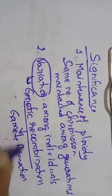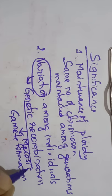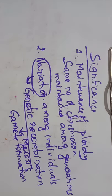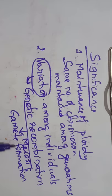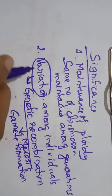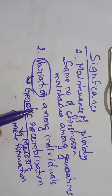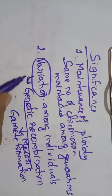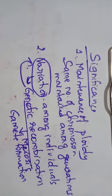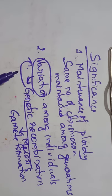Gamete formation is nothing but meiosis — gametes are formed because of meiosis. So variation among individuals occurs because of genetic recombination during gamete formation, and gamete formation occurs because of meiosis. Therefore, another important significance of meiosis is that genetic recombination occurs during meiosis, and this leads to variation among individuals. Where exactly genetic recombination occurs will be studied in detail when we study meiosis.